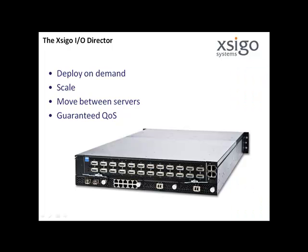The SEGO I.O. Director delivers two types of virtual interfaces: virtual NIC and virtual HBA interfaces. These SEGO virtual interfaces behave like their physical counterparts, but provide the following benefits. Deploy on demand — add as required without adding cards or rebooting servers. Scalable — deploy dozens of virtual interfaces to a server. Mobile — move interfaces between servers without changes to data center infrastructure. Quality of service — provides guaranteed bandwidth for predictable performance.